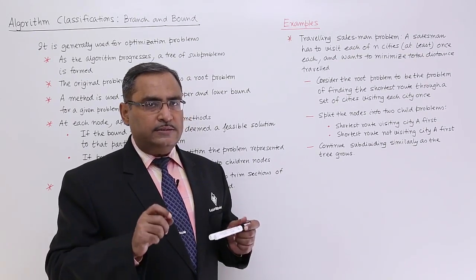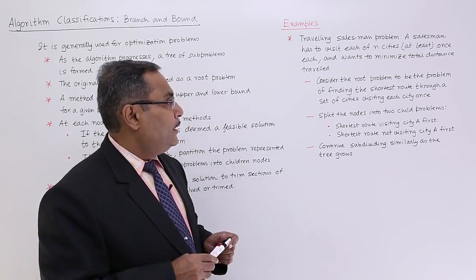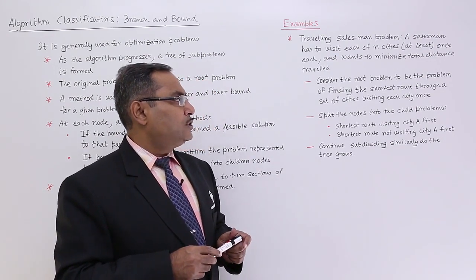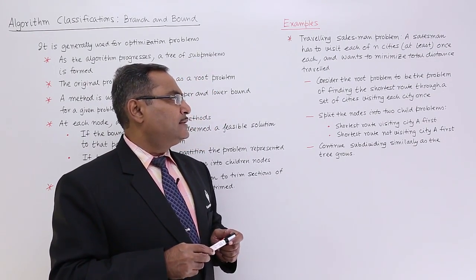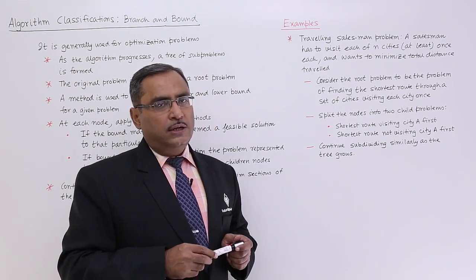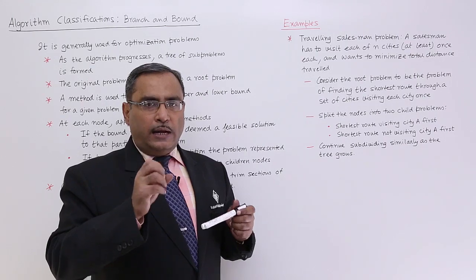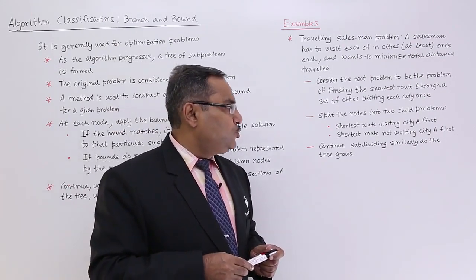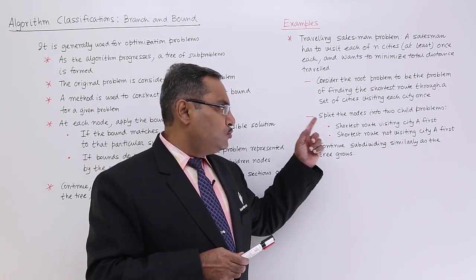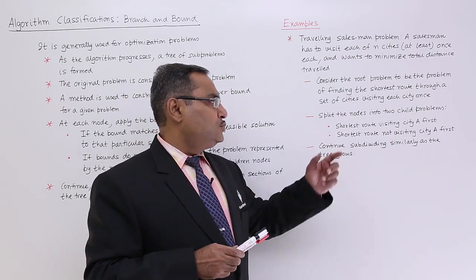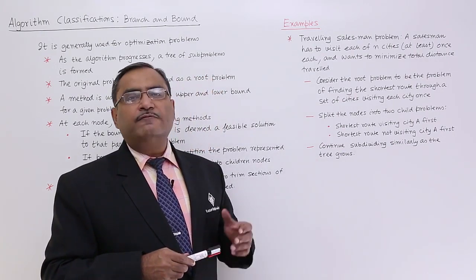by the travelling salesman. All the cities are to be visited at least once and also the distance traversed should be minimum. Consider the root problem to be the problem of finding the shortest route through a set of cities visiting each city once. That is my root problem and now I shall go for the sub-problems. Split the nodes into two child problems: one, shortest route visiting city A first, and shortest route not visiting city A first.